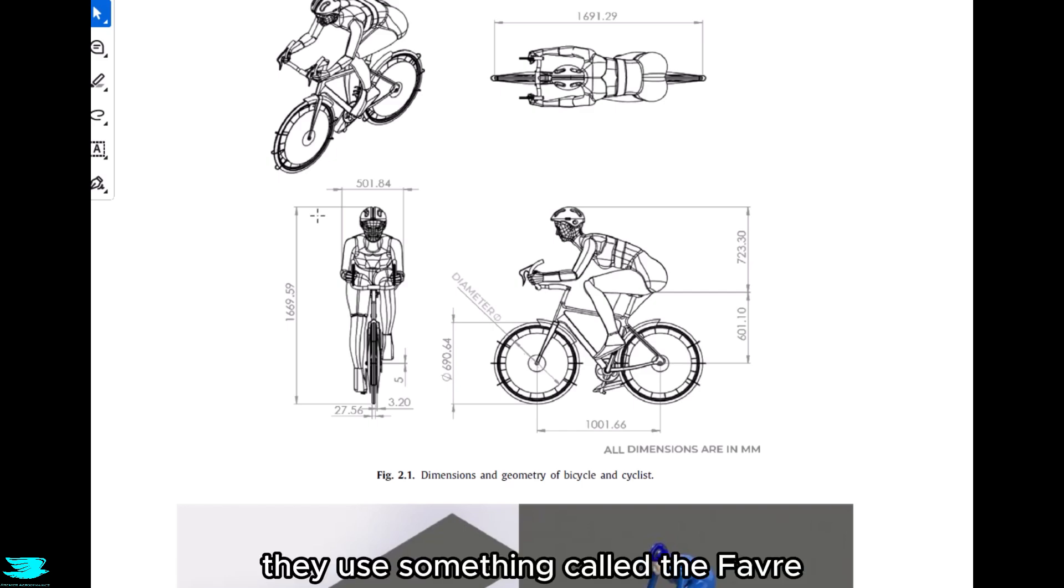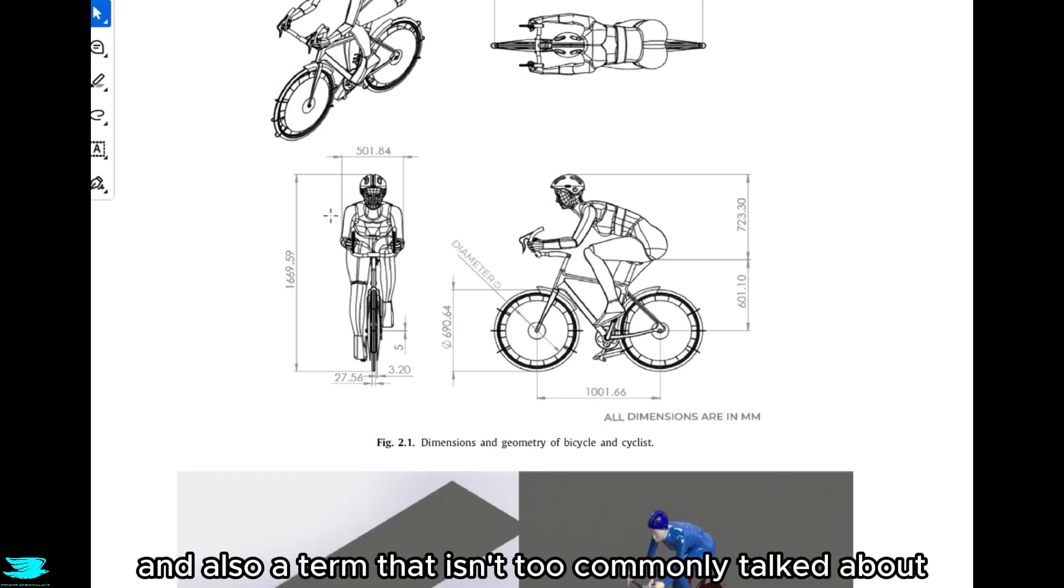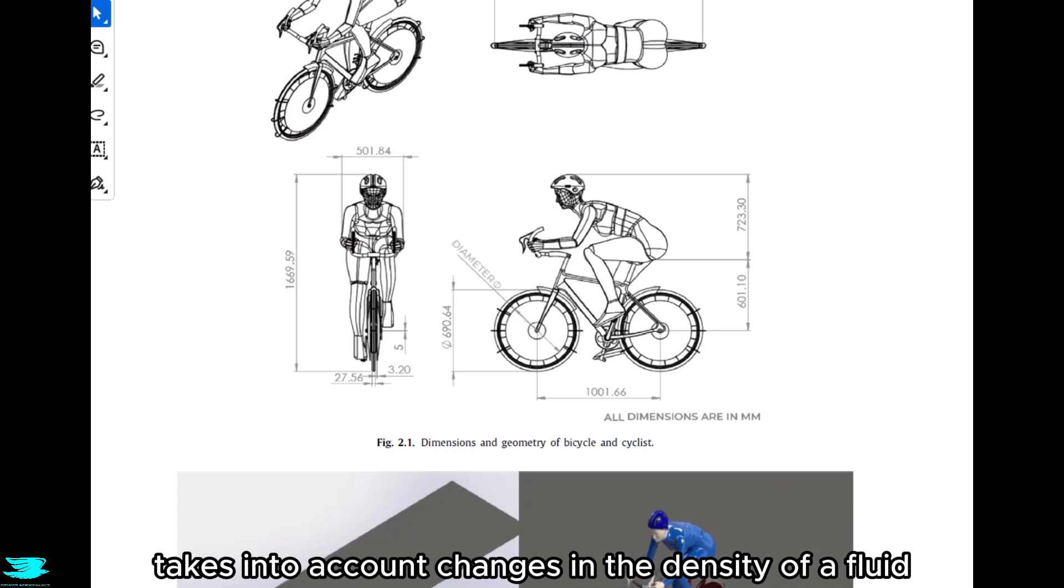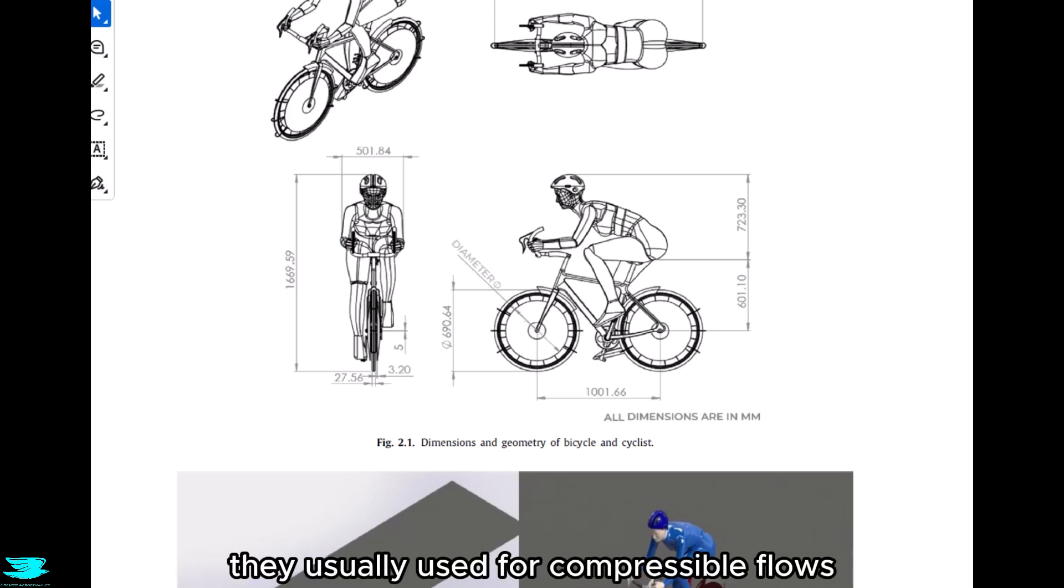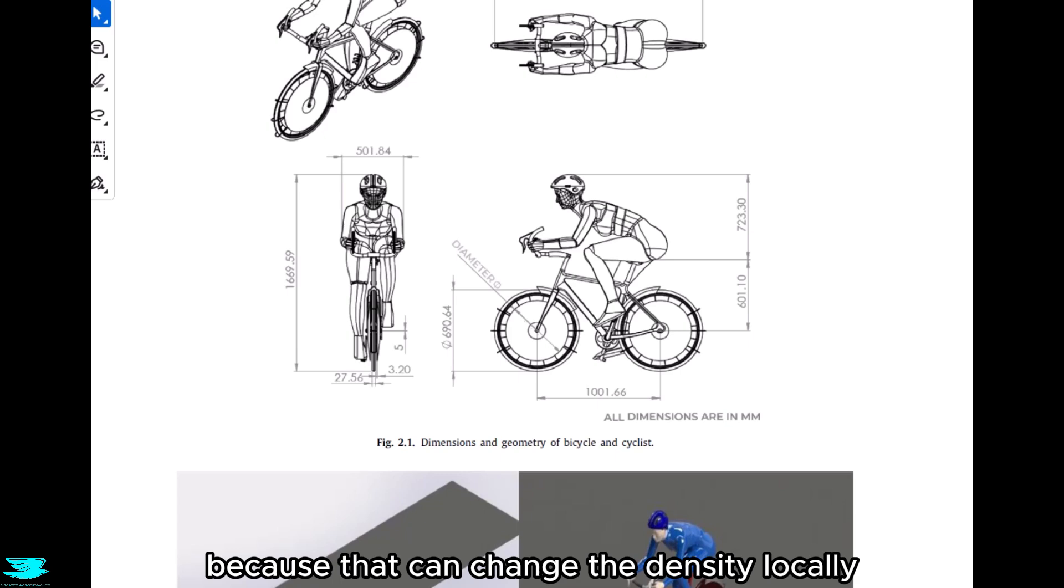For their CFD setup, they use something called the Favre-Average Navier-Stokes Equations, so FANS instead of RANS. This is a little weird and also a term that isn't too commonly talked about. The FANS, so Favre-Average Navier-Stokes Equations, takes into account changes in the density of a fluid. They're usually used for compressible flows. It could be argued that it should be used for high turbulent flows because that can change the density locally, but the results have shown that it's not really necessary. RANS is usually pretty good for that anyway. The reason why the author selected it instead of the regular Reynolds-Average Navier-Stokes Equations, the author said is because it simplified the simulations. Either way, they used RANS or FANS, that would be fine. They used FANS here though.